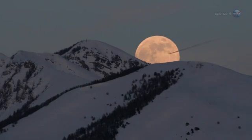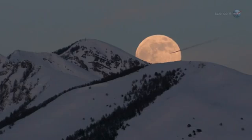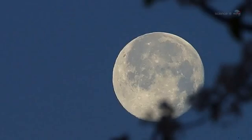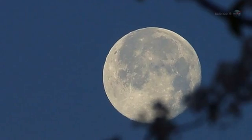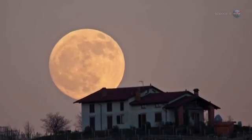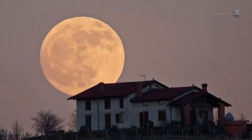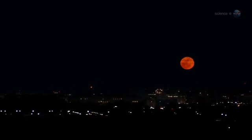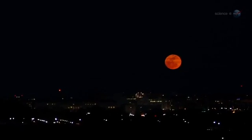The best time to look is when the moon is near the horizon. For reasons not fully understood by astronomers or psychologists, low-hanging moons look unnaturally large when they beam through trees, buildings, and other foreground objects. On May 5, this moon illusion will amplify a full moon that's extra big to begin with. The swollen orb rising in the east at sunset will seem super indeed.